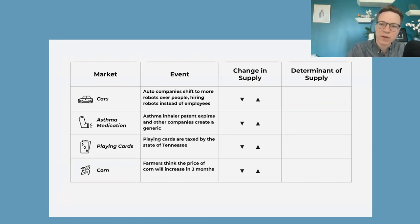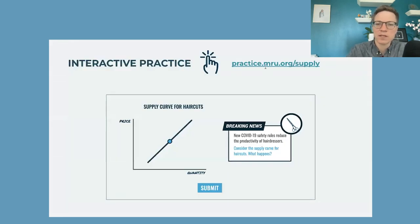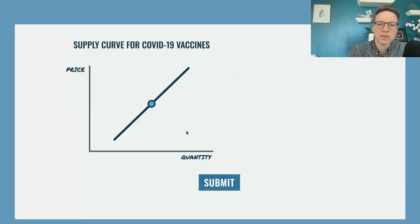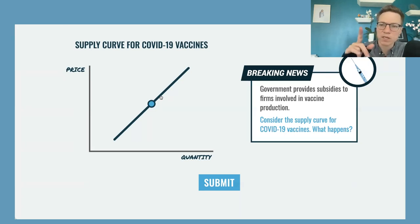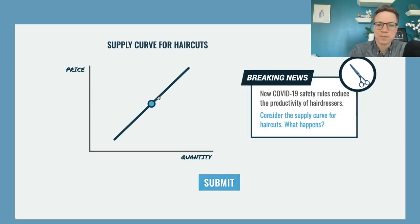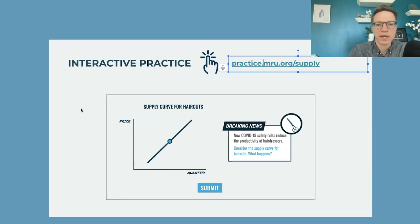We have a table where students get an event and have to figure out: is this going to increase supply or decrease supply, and which one of those supply shifters is it related to? Then we have another one of these interactives where students have to say — just like on the demand side — is this a change that is going to move us along an existing supply curve? A change in the own price of the good itself moves us along the curve. If we have a change in one of the fundamentals of supply — a shift in cost, number of sellers, or expectations — that's going to move the curve itself. Here we have a subsidy that's going to increase the supply, and this other one is going to decrease the supply.